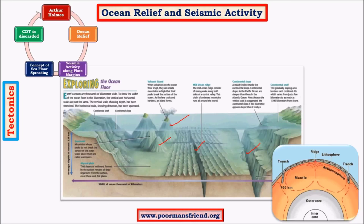Seismic activity is the production of earthquake waves or seismic waves at plate margins. These mainly happen between two oceanic plates — that is, between ridges — and between oceanic plates and continental plates at trenches. Earthquake waves at ridges are called shallow focus earthquakes, which are of low intensity, whereas at trenches the earthquakes are deep focus earthquakes of great intensity. We'll study shallow focus and deep focus earthquakes in the concept of earthquakes.